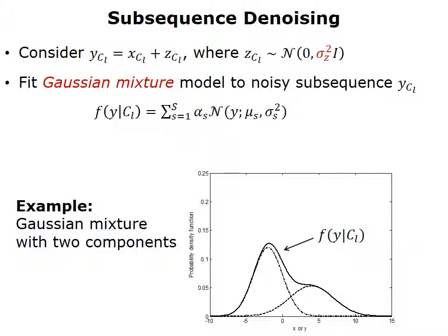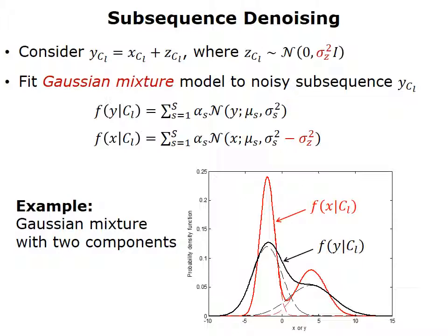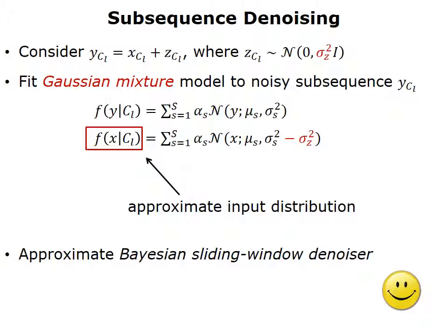To denoise the noisy sub-sequence y — recall that it has the structure x plus z, where x is the clean sub-sequence and z is Gaussian noise — we fit a Gaussian mixture model to the noisy sub-sequence y. In the illustration, you can see the two dashed black lines. We can subtract the variance of the noise z from the black lines, resulting in the dashed red lines. Adding up the two dashed red lines gives us the solid red line — that's our estimate for the distribution of the clean sub-sequence x. Now that we have the distribution of the clean sub-sequence x, we can denoise the noisy sub-sequence y. Denoising over all the different sub-sequences allows the universal denoiser to approximate the performance of the optimal Bayesian sliding window denoiser.